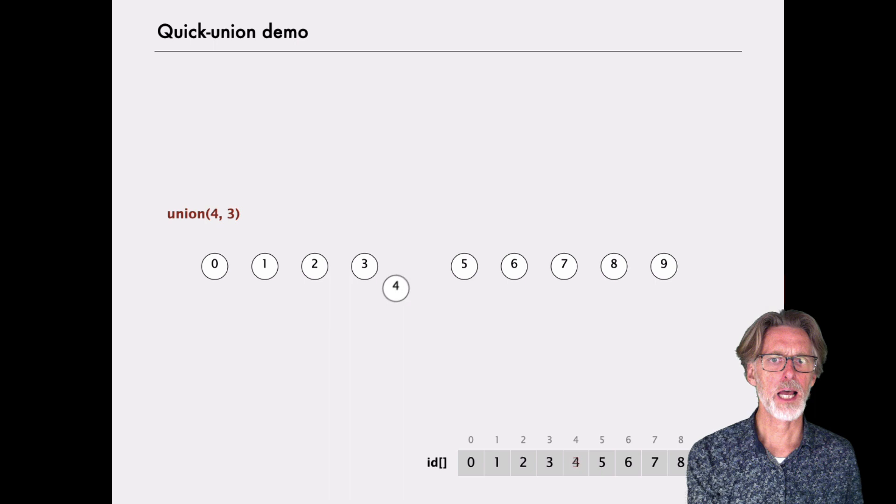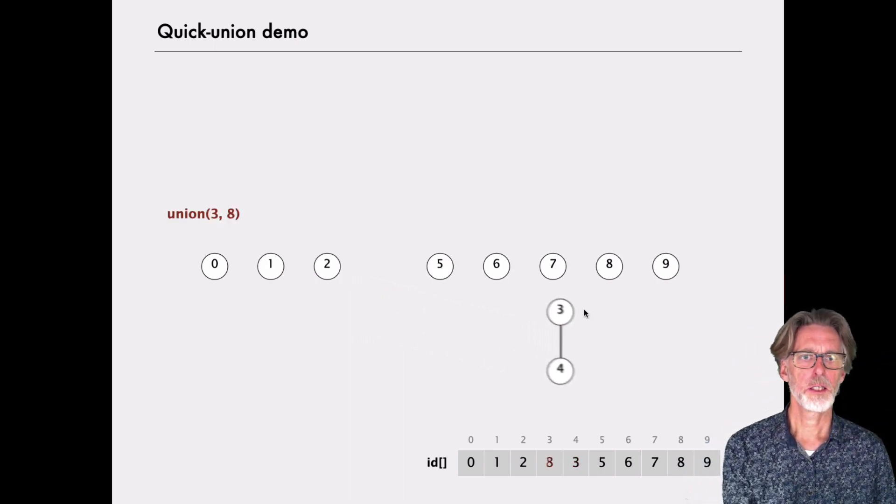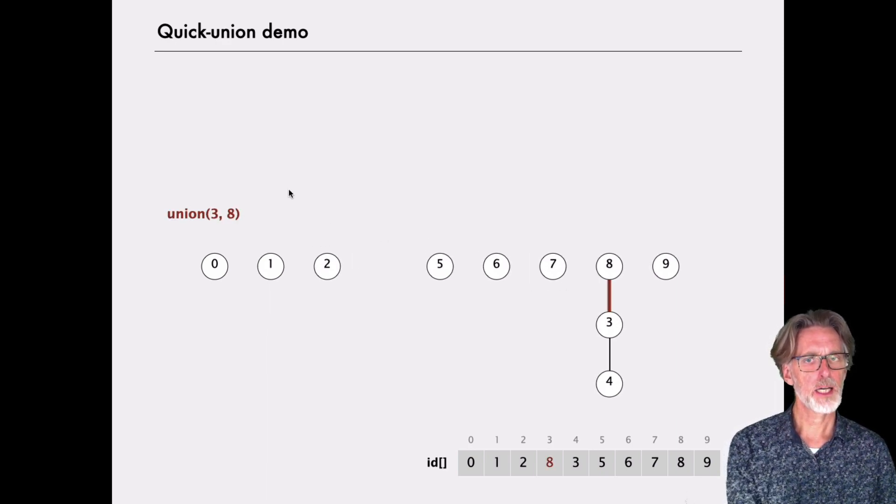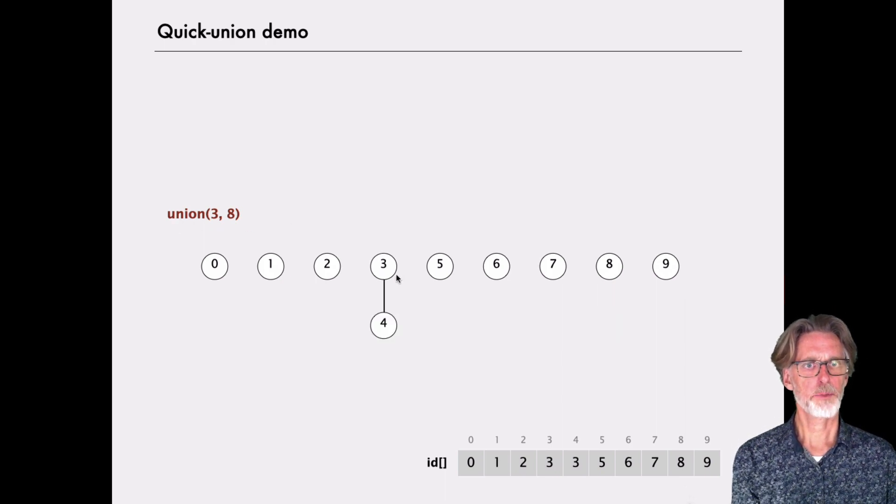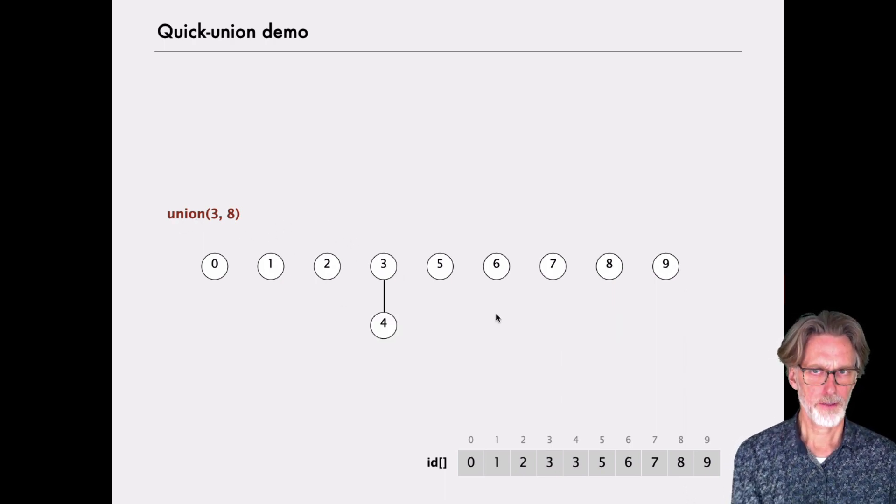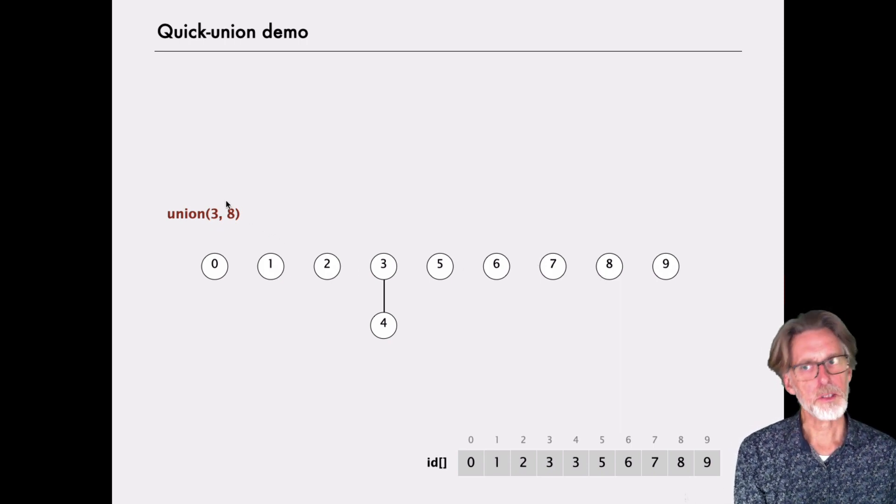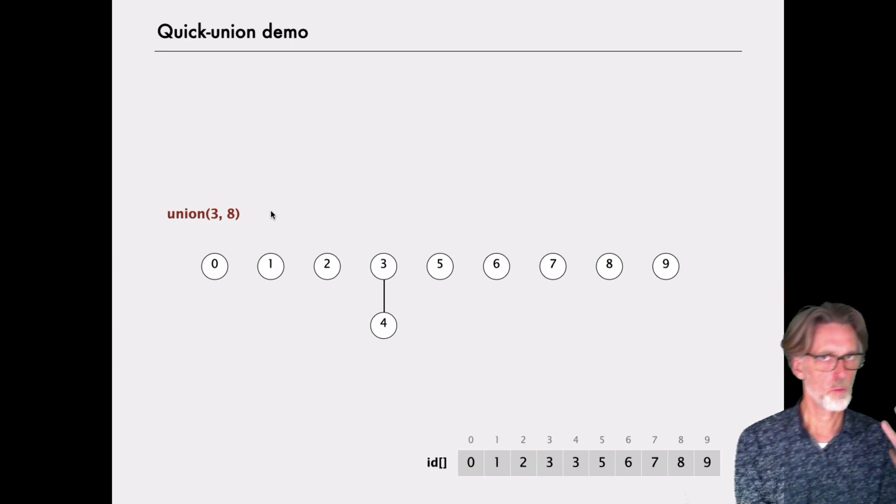So you can watch this happening through a demo. Here, if we union together elements, you'll note that immediately we have interesting structure because when I union, for example, let's go back. If I'm in this state and I union 3 and 8, well, the authors of the textbook have coded this so that the right-hand side always wins.